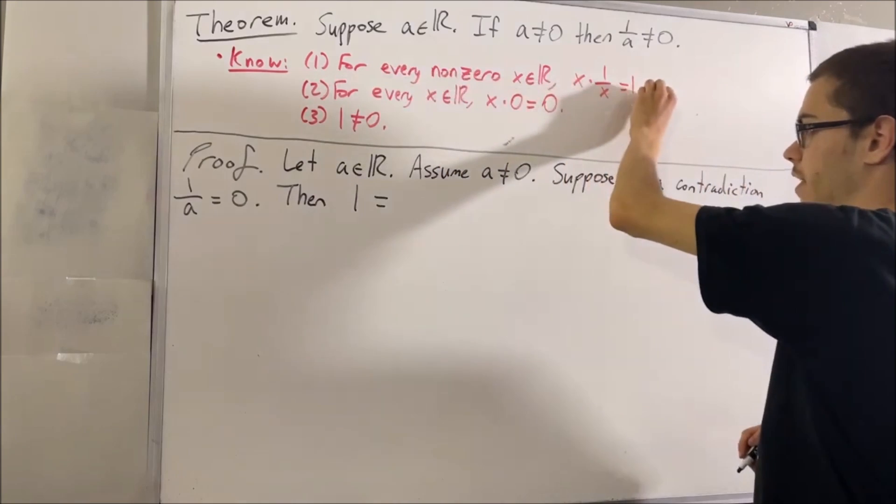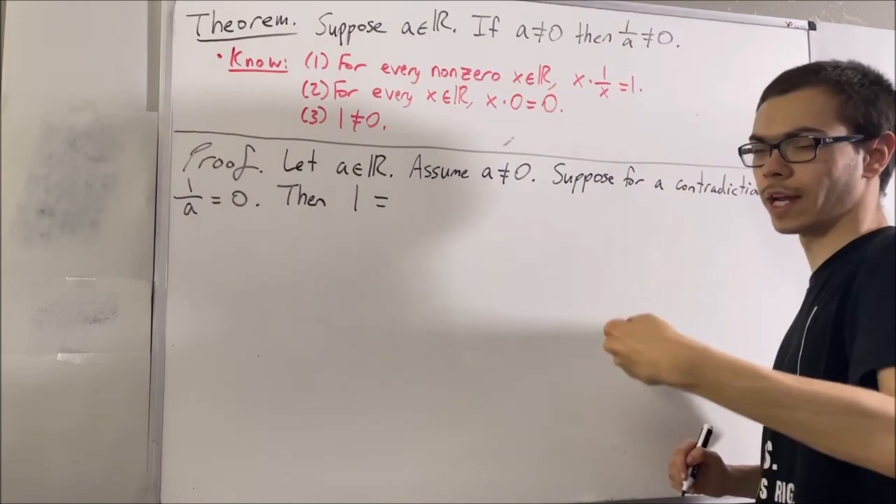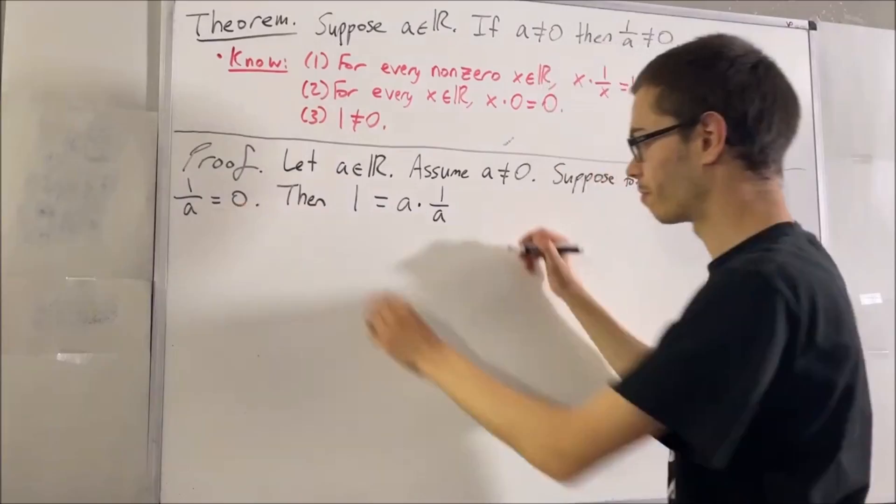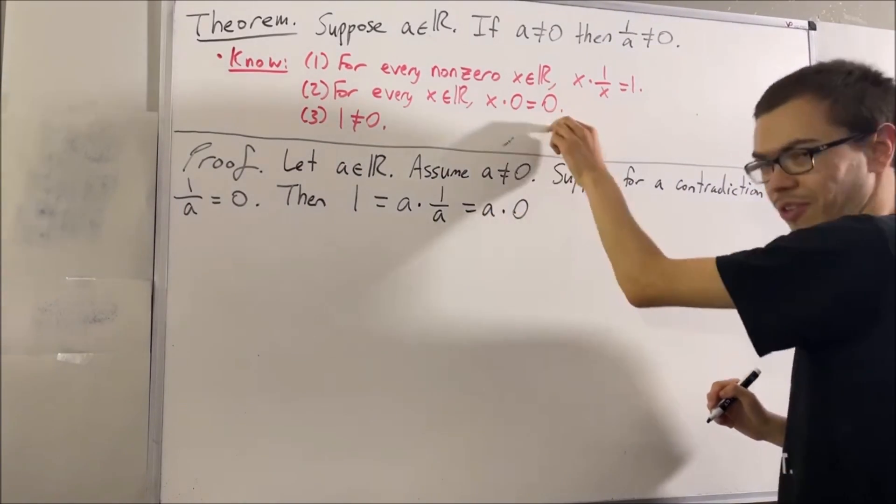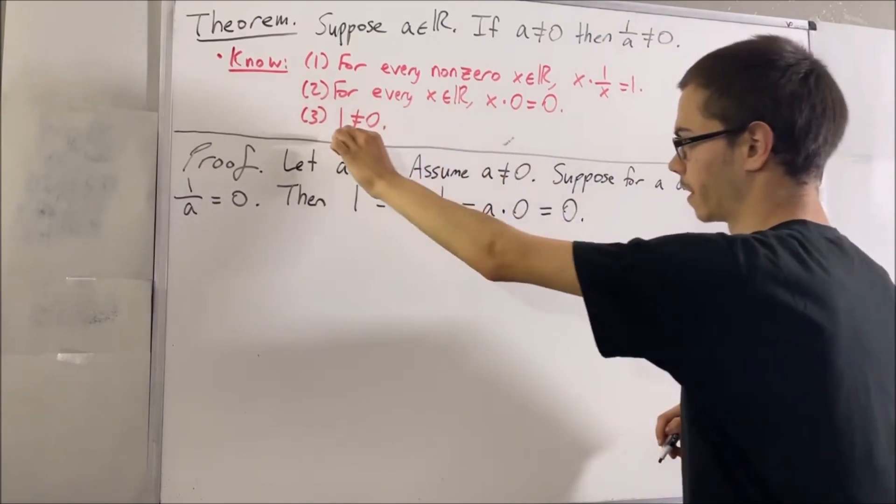We know that from the first fact, since A is not equal to zero, it follows that A times one over A is equal to one. But remember, one over A is equal to zero. From our second fact, A times zero is equal to zero. So we see that one equals zero, which contradicts the fact that one is not equal to zero.